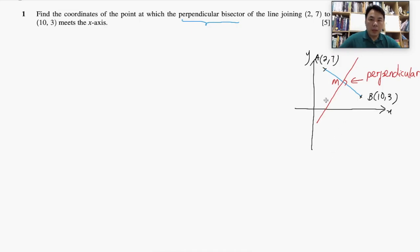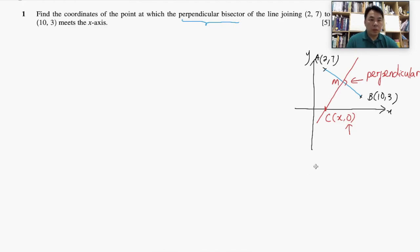This perpendicular line meets the x-axis at a point here — let's label this as C. We know about this point C that it has an x-coordinate, but the y-coordinate is 0. So this is extra information we know about where the perpendicular line cuts the x-axis. Now we are ready to solve this problem — finding the coordinates of point C is our objective.